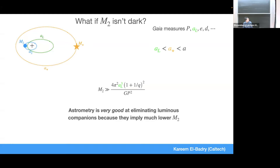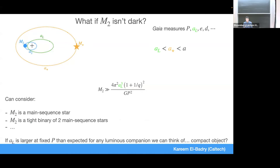Basically what we do: take all the astrometric orbits from Gaia, measure periods and the size of the photocenter ellipse, calculate M2, and then consider possibilities. Could you get this big a photocenter ellipse from a luminous star? If not, go to step two: could you get it from two luminous stars in a triple? You can fit more mass in the same amount of light, but if the orbit is big enough, you can eliminate that too. It's basically a process of elimination — if you can't think of anything else, you say it must be a compact object, and if it's too massive to be a neutron star, it's probably a black hole.